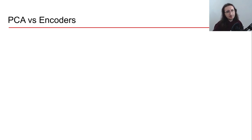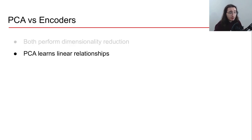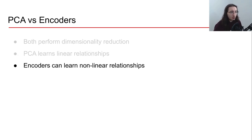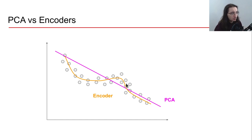You may be wondering: is the encoder some kind of dimensionality reduction algorithm, comparable to PCA or principal components analysis? In a certain sense, yes — both PCA and encoders perform dimensionality reduction. But PCA learns only linear relationships, whereas encoders can learn non-linear relationships. Looking at a 2D example, with PCA we can only fit the data with a line, whereas with an encoder we can have a non-linear curve that fits the data better.